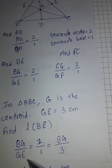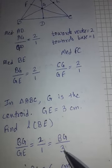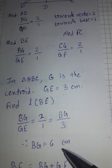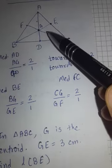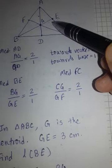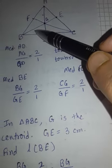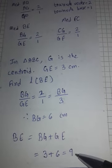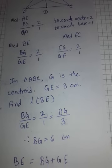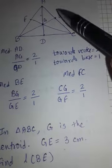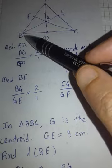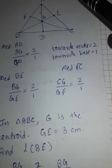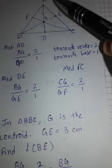So I can substitute here: BG upon GE is 2:1, and GE is 3 cm. So BG upon 3 equals 2 upon 1, which gives BG as 6 cm. GE is 3 and BG is double that, so this is 6. Now I need to find BE: 6 plus 3 equals 9. That will be your answer. You must solve this in half a second — GE is given, so BE will be 3 times GE. This is 1 part and that is 2 parts, so totally there are 3 parts. If GE is 3 cm, the whole BE will be 9 cm.